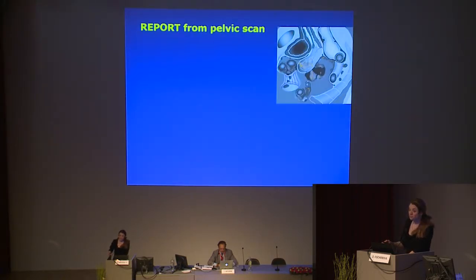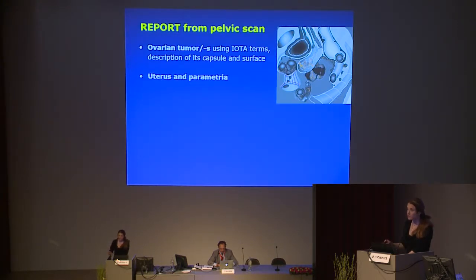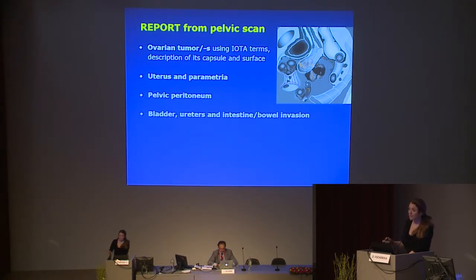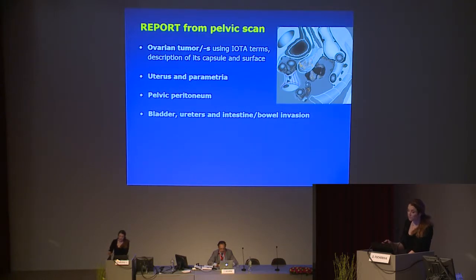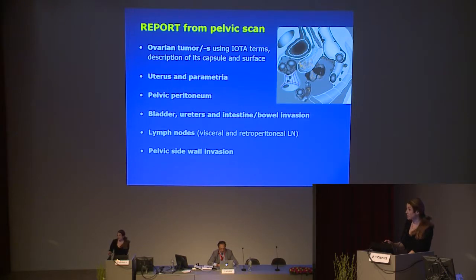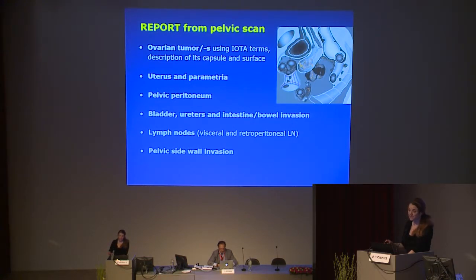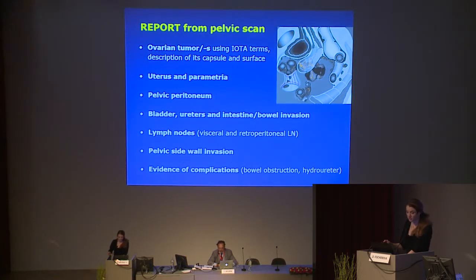The structured report from the transvaginal scan should include: description of the ovarian tumor, infiltration of uterus and parametria, infiltration of peritoneum (noting size — whether sheet-like, solitary, minuscule or bulky), involvement of visceral organs, lymph nodes, infiltration of the pelvic side wall (when tumor grows into the psoas, iliac vessels, or ureter), and evidence of hydroureter or bowel infiltration.